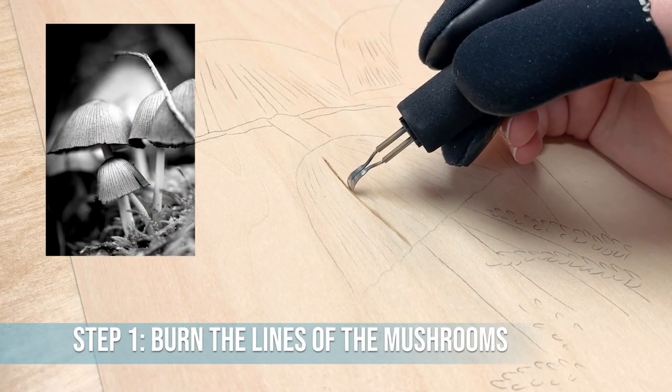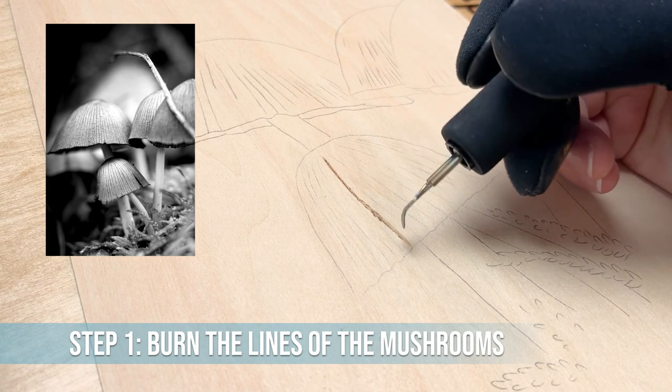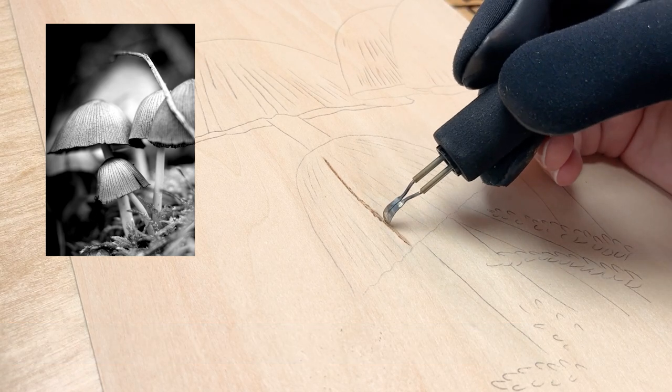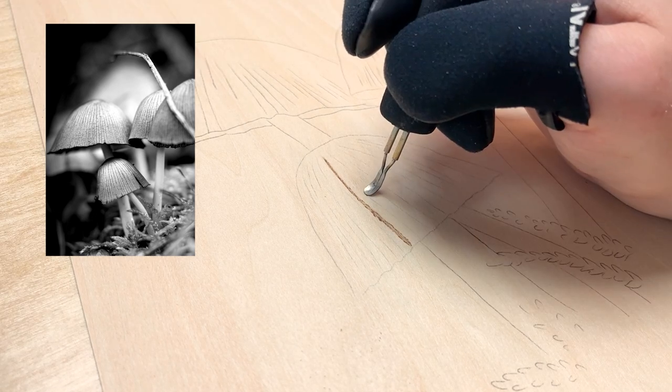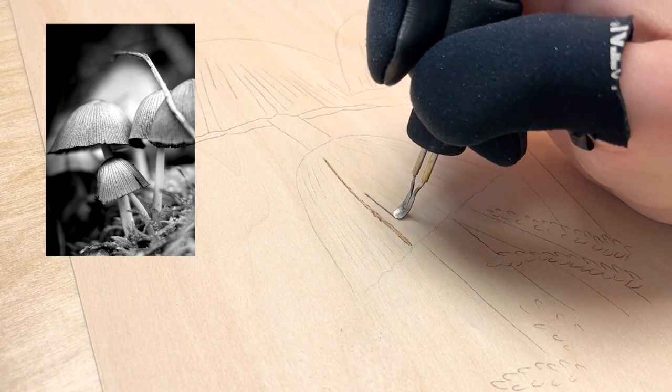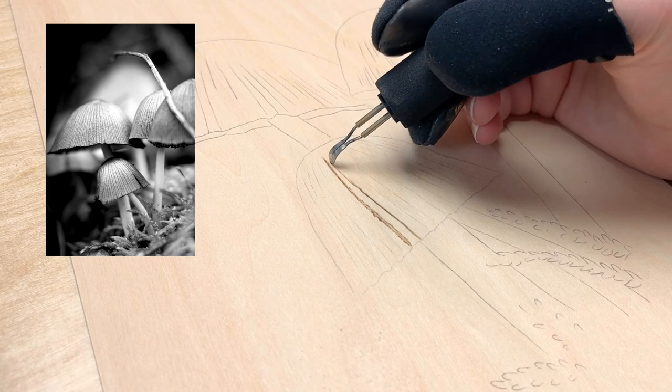The first thing I'm going to do is add this line structure in. Before I add any shading details, I want to get all of these little lines added in and kind of get the structure of these going. I'm going to start by burning a simple line, then going back through and adding some little jagged edges so it looks more natural.